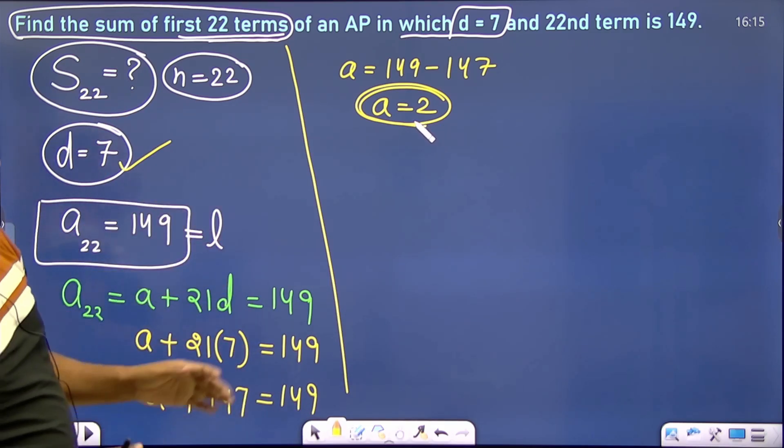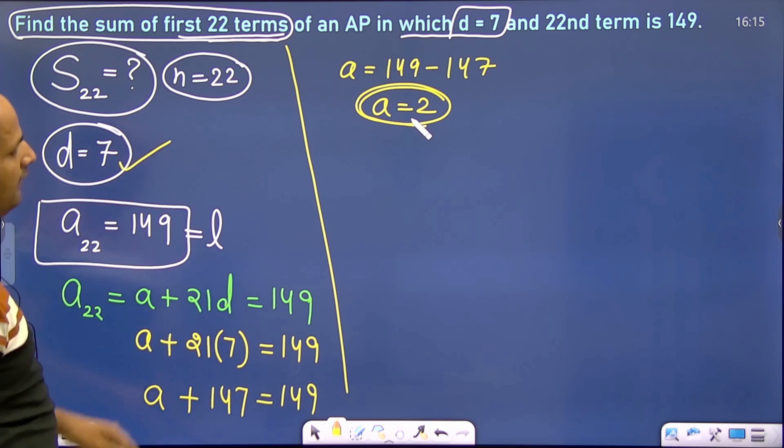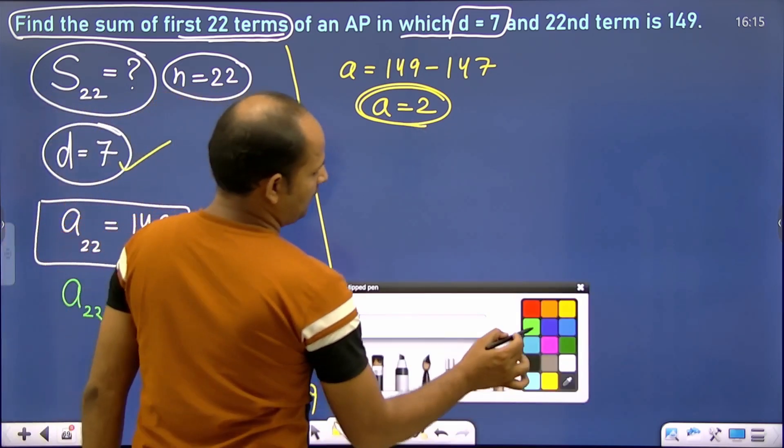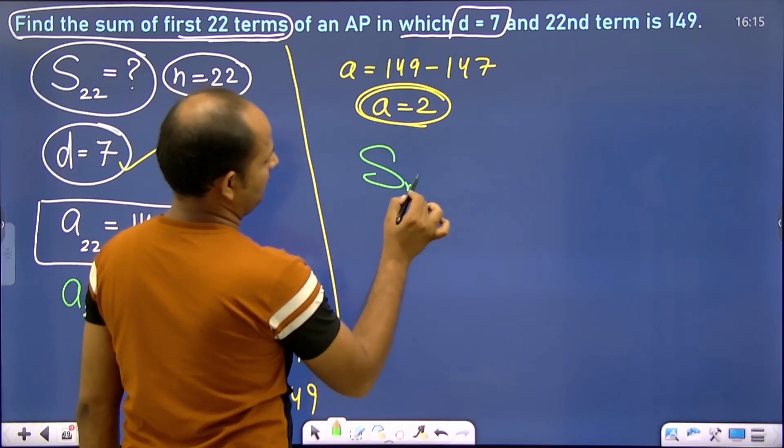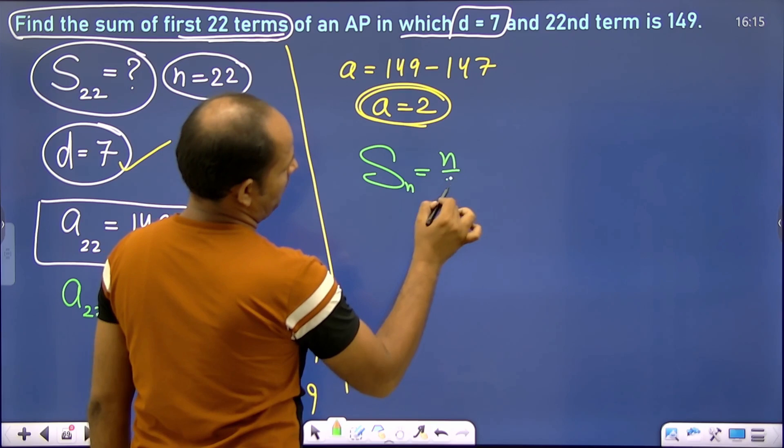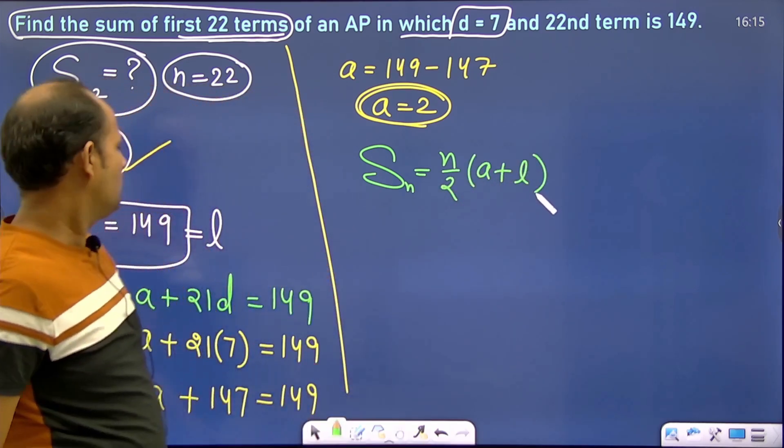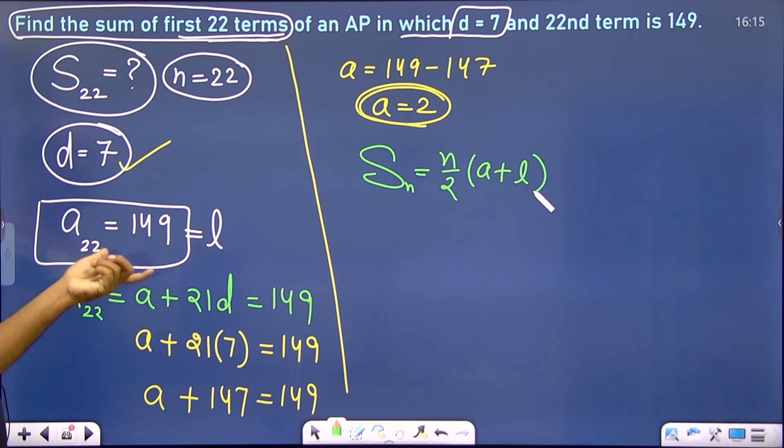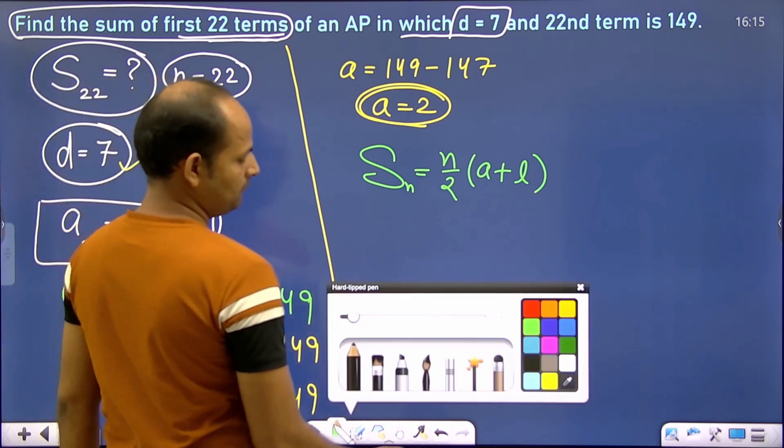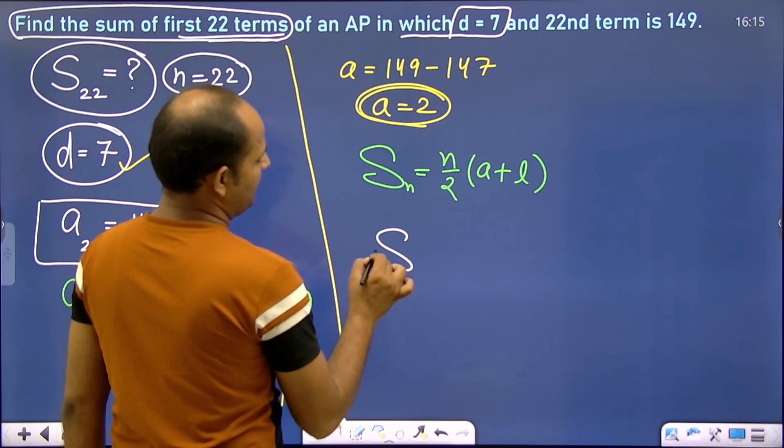Now we have a. Now what do I have to find? Sn. The formula is n/2(a+l). I can also use this since I have the last term and I have d. It depends on me. How many terms' sum do I need to find? 22, so n is 22.